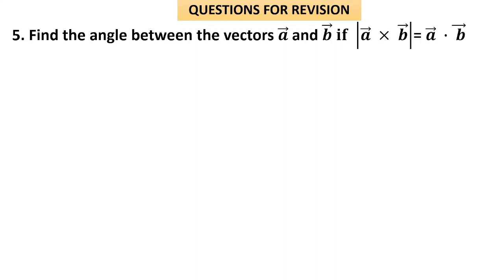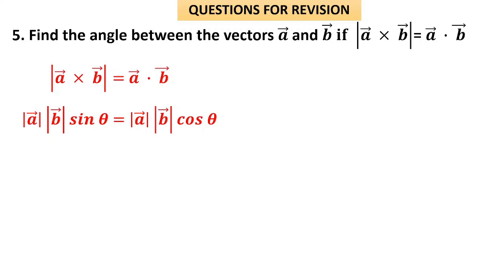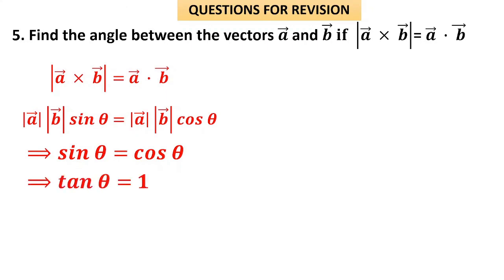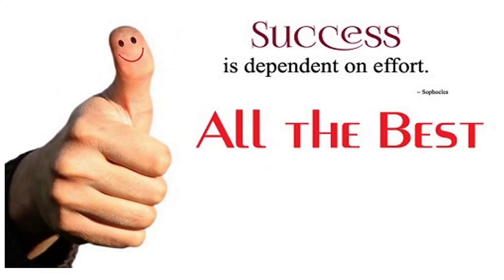Question 5: Find the angle between vectors a and b if |a × b| = a·b. Since |a × b| = |a||b|sinθ and a·b = |a||b|cosθ, and the vectors are nonzero, we can cancel |a||b| to get sinθ = cosθ, so tanθ = 1, giving θ = π/4. The angle between the vectors is π/4 when |a × b| equals a·b. Success depends on efforts — all the best!